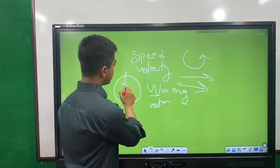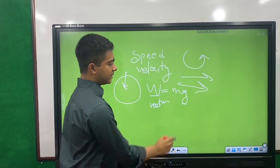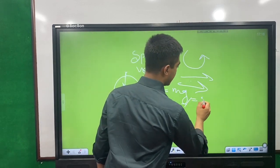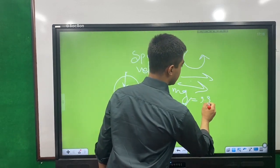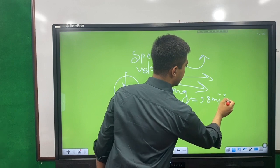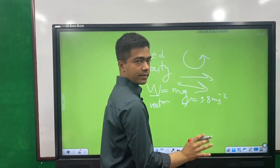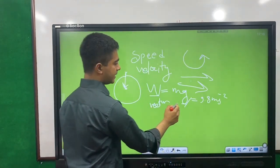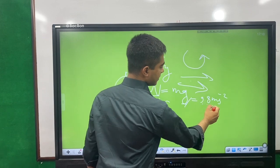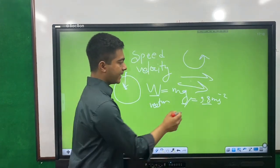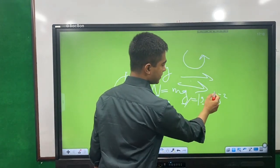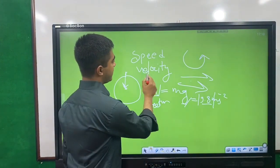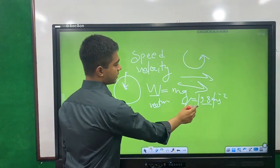The direction of weight is toward the center of the Earth. G has a value of 9.8 m/s². It is a vector quantity because it has both a direction — toward the center — and a magnitude of 9.8.